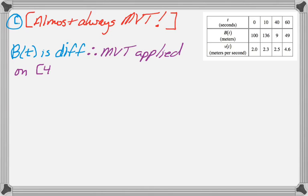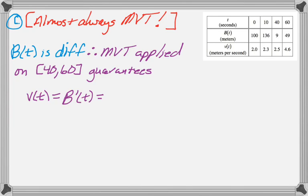And on the interval from 40 to 60, it's guaranteed that the following will happen. So B(t), which is really just B'(t), has to be equal to, for some value between 40 and 60, the slope of the secant line. So that's B(60) minus B(40) over 60 minus 40.